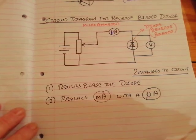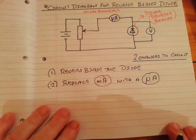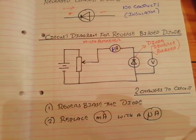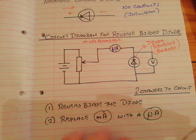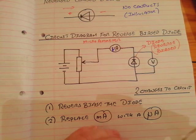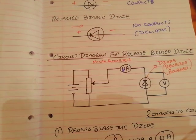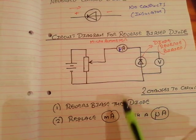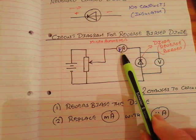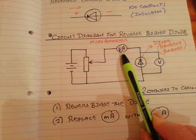When you do this and plot the graph, you find something really interesting happens — you get a small current going the wrong way. That has uses in something called a zener diode, which is not on your course. We've made two changes: reversed the diode and put in a microammeter instead of a milliammeter because it reads smaller currents.